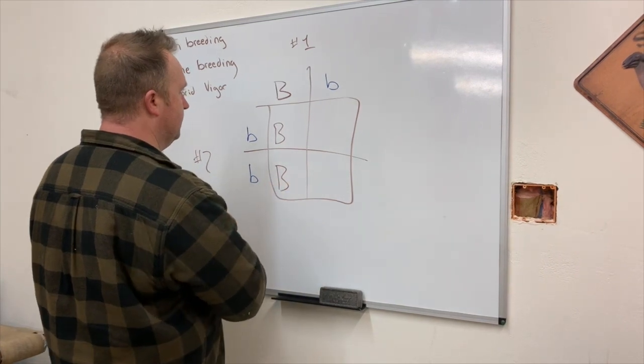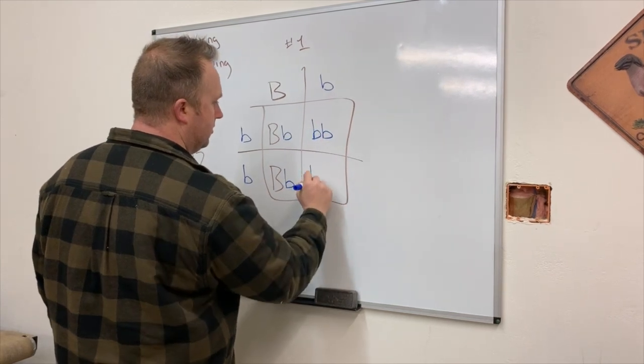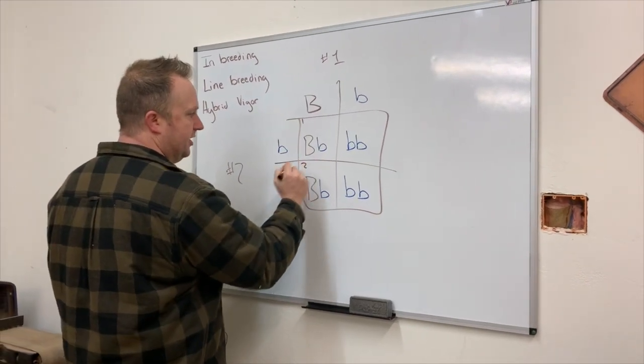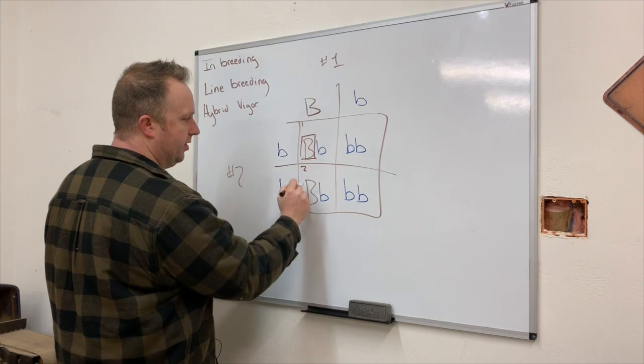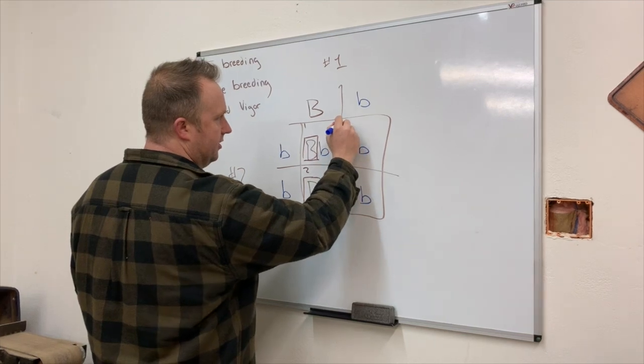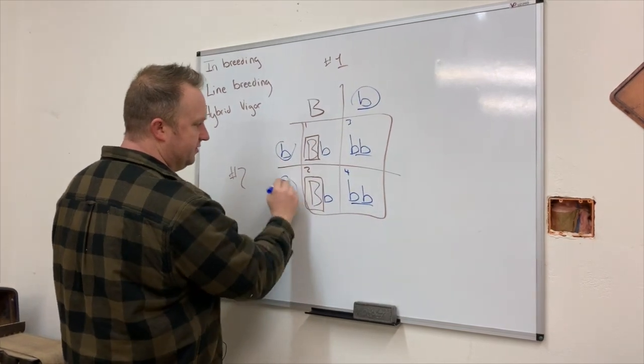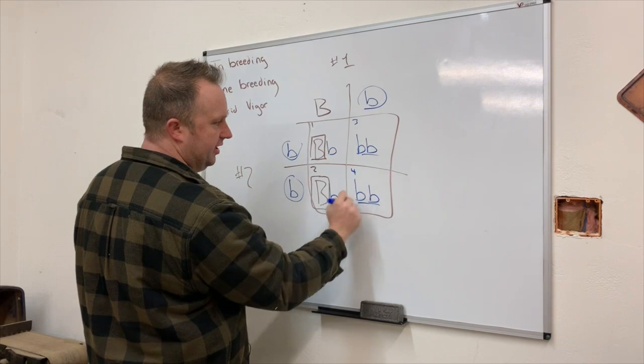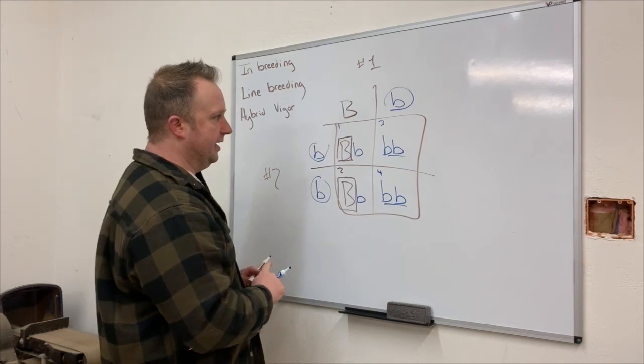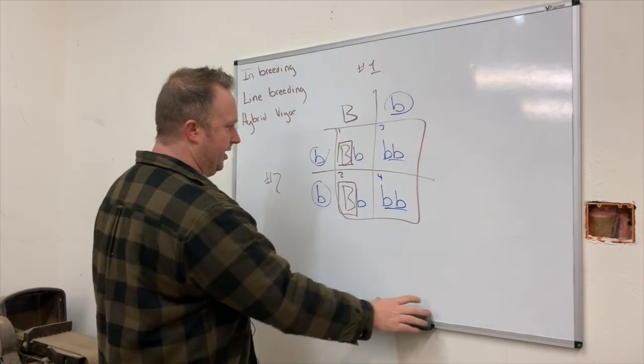We have parent one and parent two. This child and this child are going to have brown eyes because that dominant brown masks the recessive blue. But in this case, child three and child four are both going to have blue eyes because that recessive gene has to show itself in order to manifest.